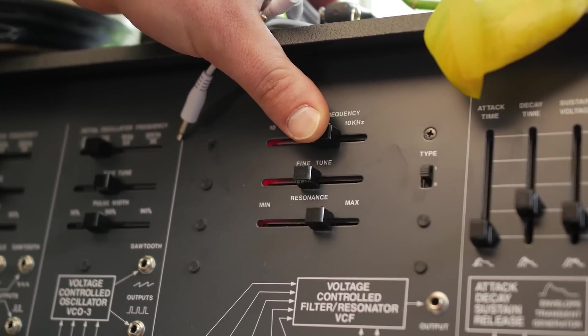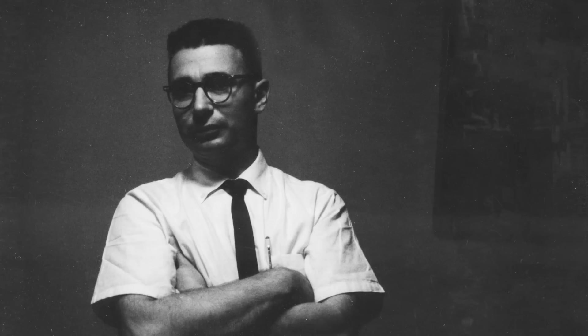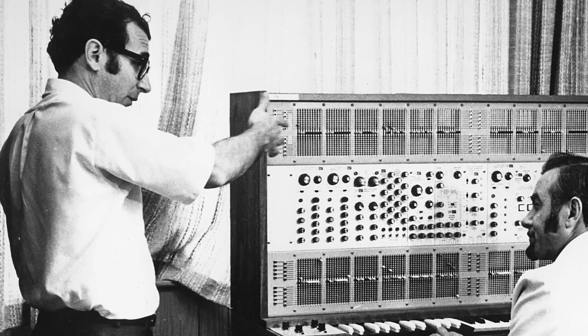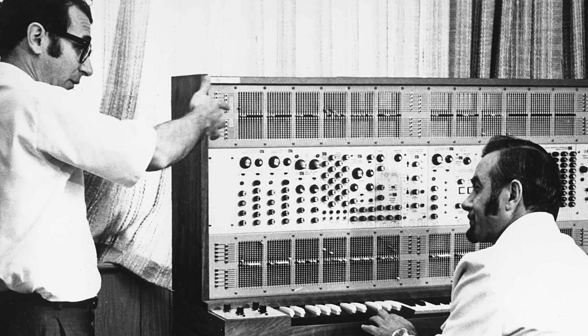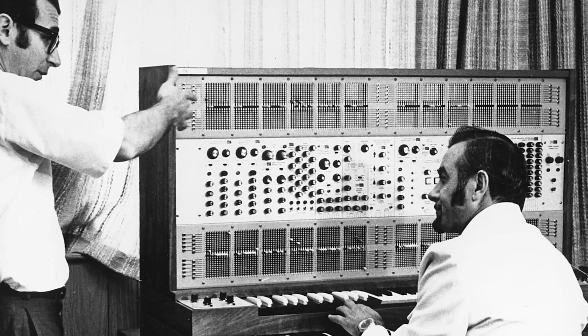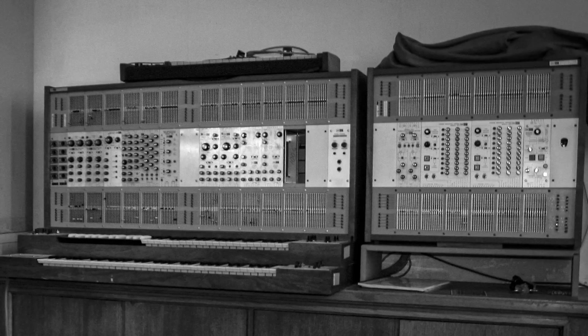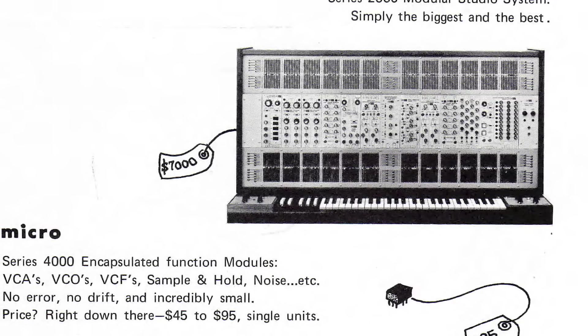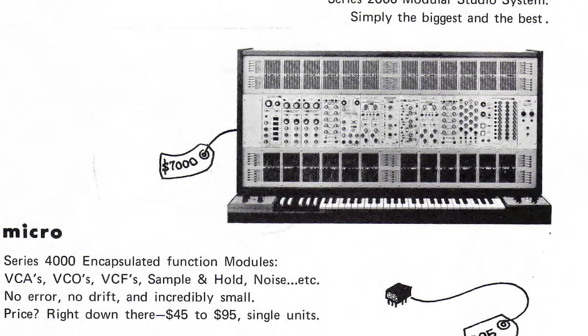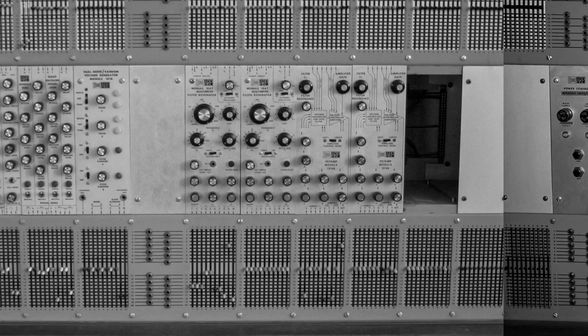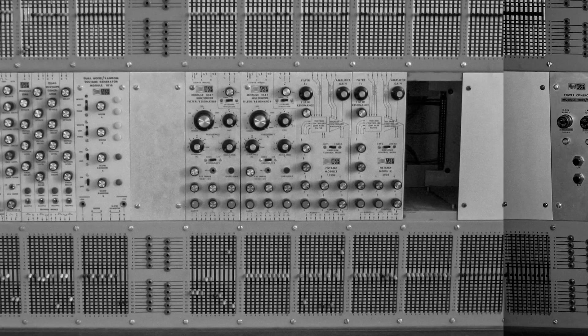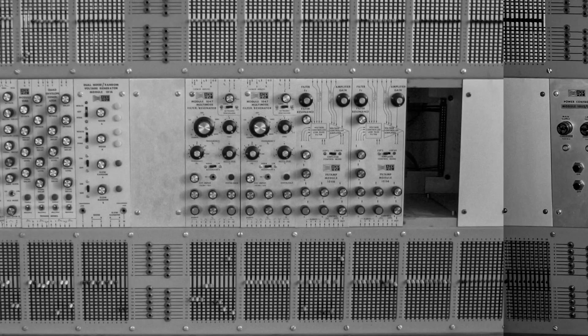In 1969, synthesizer visionary Alan R. Pearlman was working on his contribution to the very new synthesizer industry. It was an innovative modular synthesizer design that featured a matrix-based patching system instead of patch cables. The instrument was the 2500 modular system, and the company was called Tonus, but would eventually be called by a more familiar name: ARP. Pearlman had his new engineer, Dennis Collin, design a unique and distinctive filter for this instrument, named the 1047.